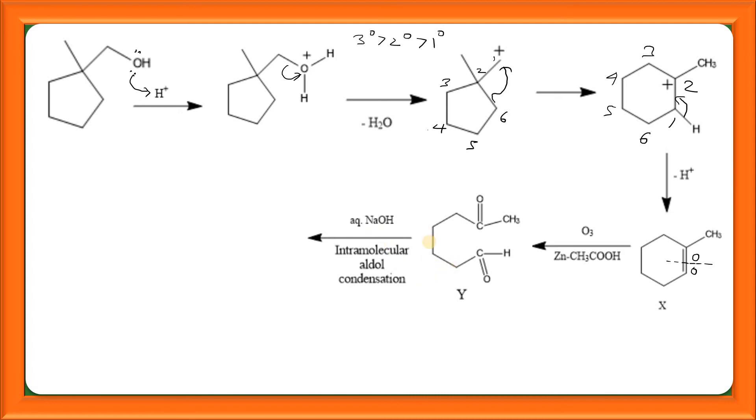This Y, in the presence of aqueous NaOH kya hota hai? Yaha pe yeh jo hai, yeh acidic hydrogen hai. OH minus from base will attack on this acidic hydrogen and formation of carbanion will take place and we get negative charge here. Then, this negative charge will attack on this carbonyl carbon and it gives rise to intramolecular aldol condensation.